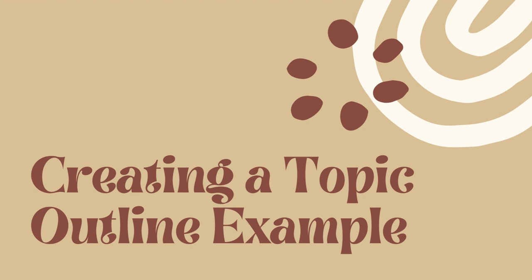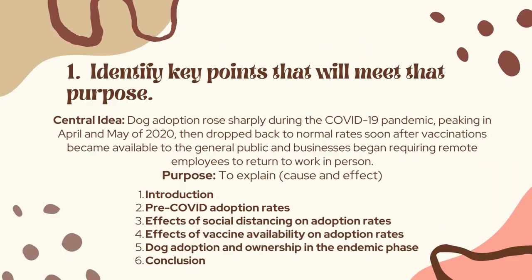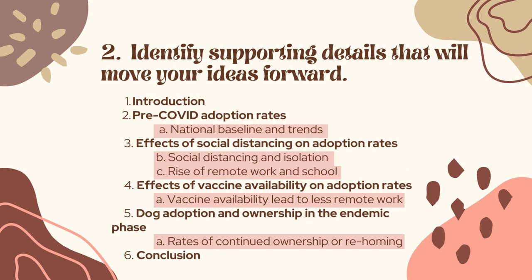Let's look at an example of an outline. For this example, we are going to be writing an essay about how dog adoption rates rose during the pandemic, but dropped back down to normal rates once COVID vaccines became available. The purpose of this essay is to explain this phenomenon and the cause and effect of why it happened. Starting out with a simple list of ideas needed to explain this event, we have: pre-COVID adoption rates, the effects of social distancing on adoption rates, the effects of vaccine availability on adoption rates, and dog adoption rates and ownership in the endemic phase. Then we can add the supporting details in more depth, thinking through what information you might need to expand on these ideas and give your reader a clearer view of the topic.